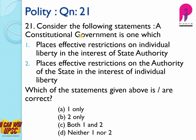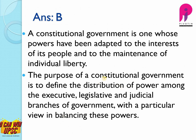Question number 21: constitutional government is one which places effective restrictions on individual liberty in the interest of state authority — no, this is wrong. Constitutional government doesn't restrict individual liberty; it places effective restrictions on the authority of the state in the interest of individual liberty — this is correct. The answer to this question is B. The purpose of constitutional government is to define the distribution of powers among the various wings of the government, which are legislature, executive, and judiciary.